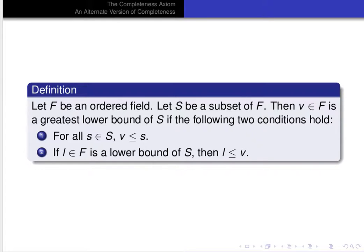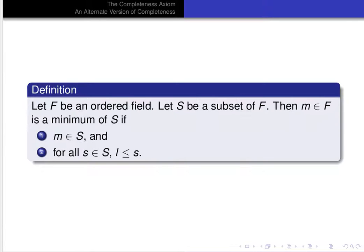Lower bound and greatest lower bound are closely related concepts. Greatest lower bound just adds a condition to the definition of a lower bound by saying it's the largest of the lower bounds. A related definition is the definition of a minimum. If F is an ordered field and S is a subset of F, then an element M in F is a minimum of S if M is in the set S and for all s in S, M is less than or equal to s.